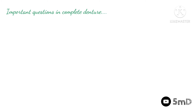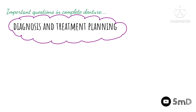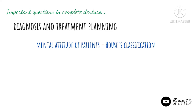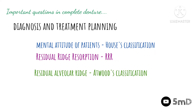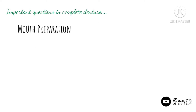Starting from diagnosis and treatment planning — on the whole this can be asked as an essay question. Within that chapter we need to concentrate on certain five-mark topics, such as the importance of examination, and the mental attitude classification given by Dr. M.M. House. The residual ridge resorption (RRR) and the classification given by Atwood can also be asked as five-mark questions, as well as the residual alveolar ridge on the whole.